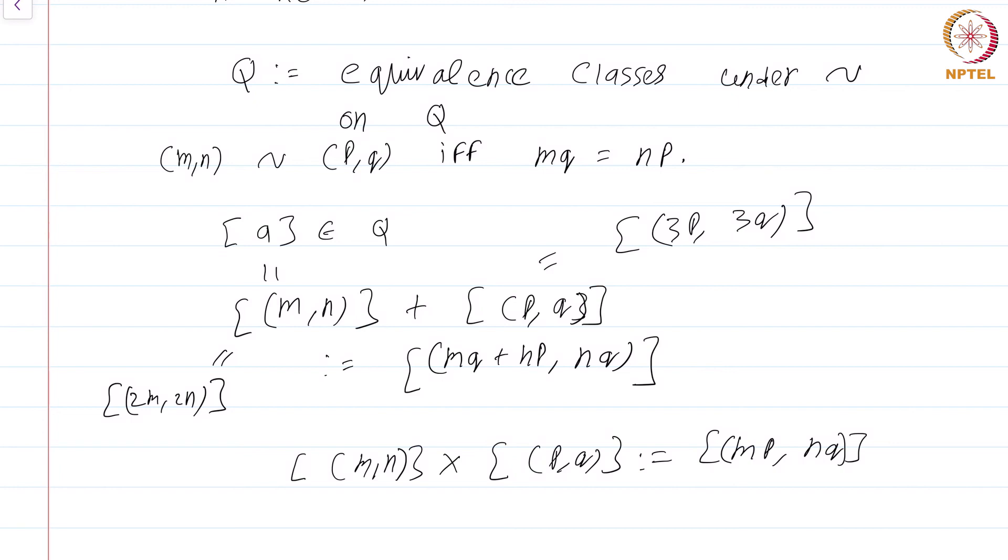Once these checks are done, you can check that all the familiar properties that rational numbers are supposed to have are indeed possessed by our collection of equivalence classes. You have to check things like associativity of addition, commutativity of addition, associativity and commutativity of multiplication, so on and so forth.